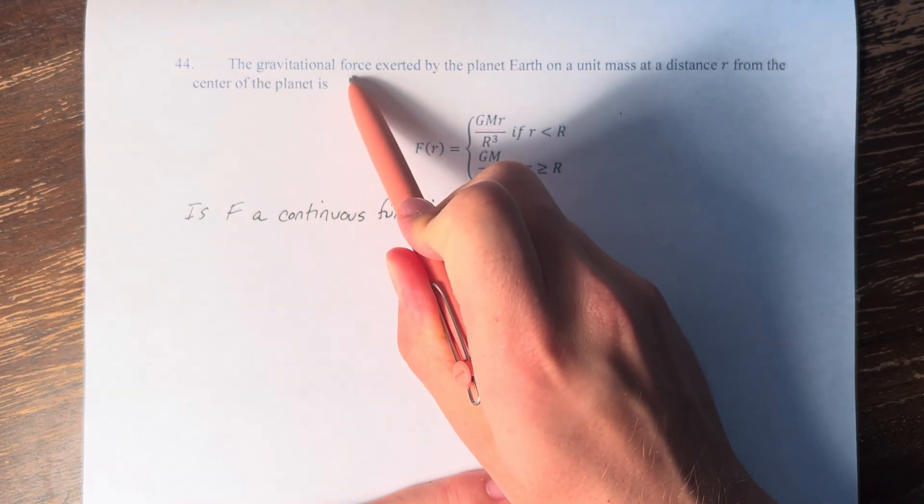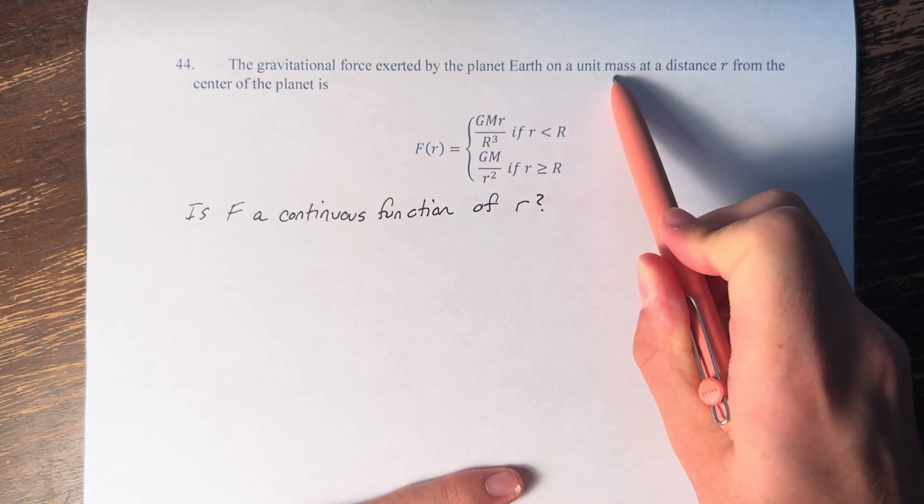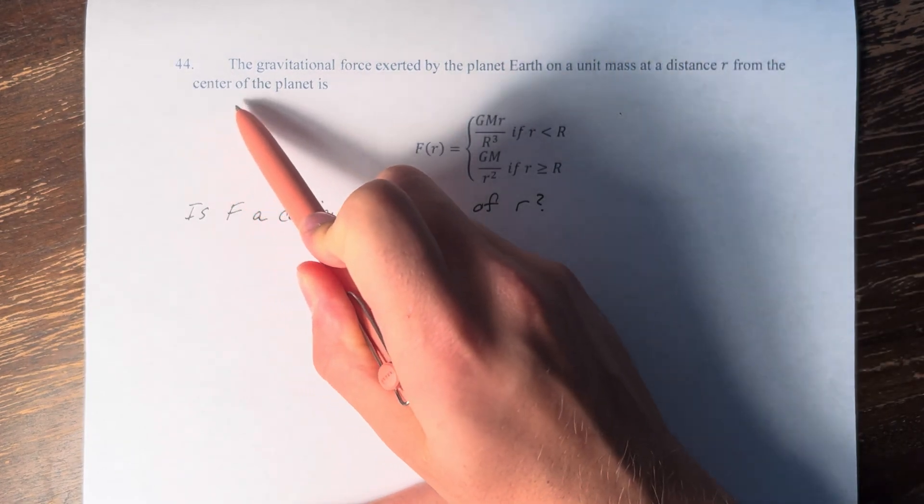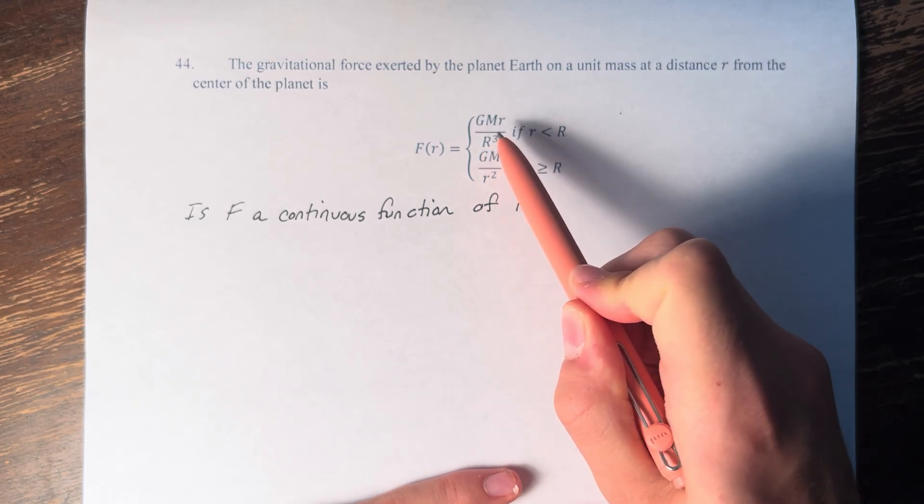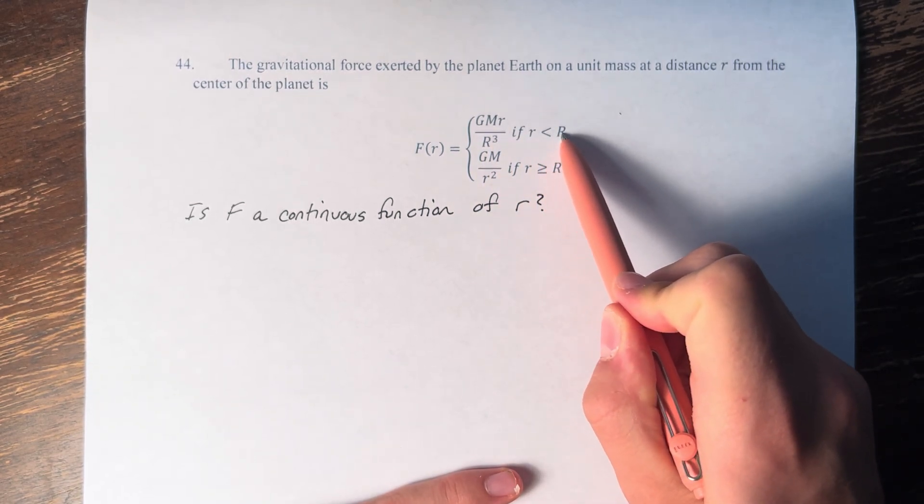In this problem, we're told that the gravitational force exerted by the planet Earth on a unit mass at a distance r from the center of the planet is F(r) equals GMr over r cubed if little r is less than big R,